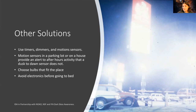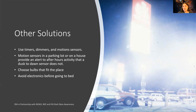Choose bulbs that fit the place — don't get very bright ones if you don't need them. Also avoid electronics before going to bed. Several studies have suggested that roughly 30 to 45 minutes of low light or no light before bed helps you fall asleep faster. So instead of pulling up your cell phone, consider reading a book.